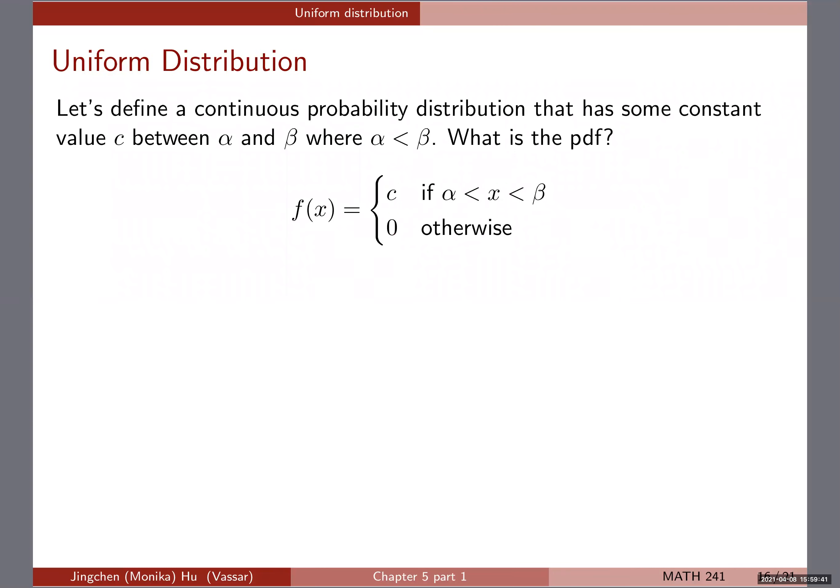We have a continuous probability distribution that has some constant value C between alpha and beta, where alpha is smaller than beta. This is a continuous random variable with a PDF. What this is saying is that the PDF is going to be a constant if it's in the particular range, between alpha and beta, and it's going to be zero otherwise.